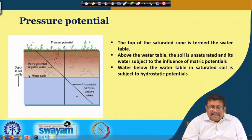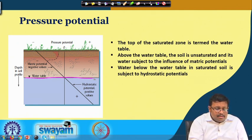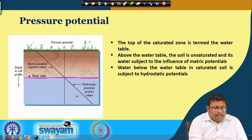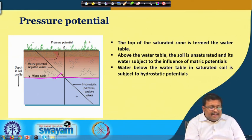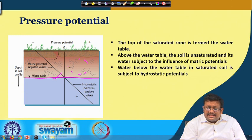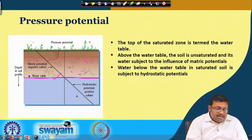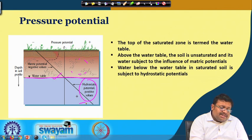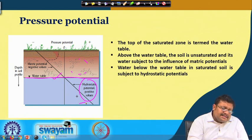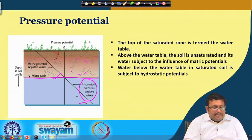This picture gives a better understanding of pressure potential considering both hydrostatic and matric potential. The top of the saturated zone is termed the water table. Above the water table the soil is unsaturated and is subjected to the influence of matric potential due to the attraction of different soil matrices. Water below the water table in the saturated soil is subjected to hydrostatic potential, which is always positive. The matric potential is always negative and is governed by capillary rise, though the rise may not be always linear and may be irregular due to irrigation or other water inputs.